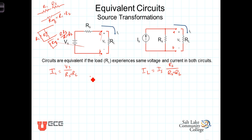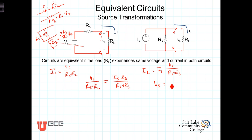Setting these two expressions equal to each other, we have V_S over R_S plus R_L equals I_S times R_S over R_S plus R_L. The denominators are the same, so for these two expressions to be equal, V_S must equal I_S times R_S. Rearranging, we can also write that I_S equals V_S divided by R_S. When these conditions are met, the current through the load resistor is the same in both the series and parallel circuits.